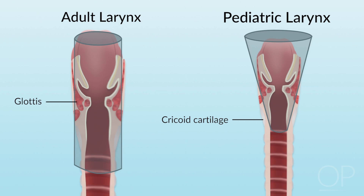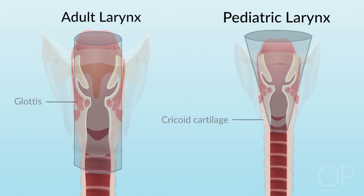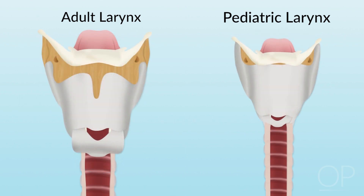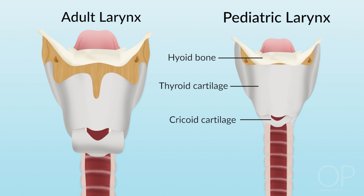Another important difference between the adult and pediatric larynx is that the laryngeal structures overlap in an infant, almost like sections of a telescope. The hyoid bone sits over the thyroid cartilage, and the thyroid cartilage overlaps the cricoid. This will stretch out with age, but in an infant, the hyoid bone can make palpation of the thyroid cartilage landmarks difficult. And because the thyroid cartilage overrides the cricothyroid membrane, cricothyroidotomy is generally not possible in children.